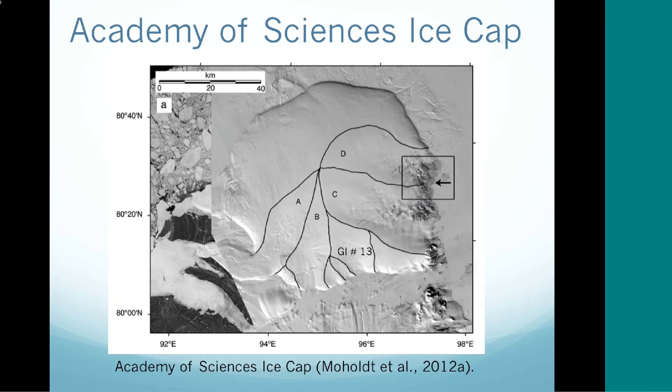This is a zoom-in on the Academy of Sciences, and the letters here are what we like to call ice streams, or areas where ice is flowing out into the ocean. There are five that we looked at. This is an outline of the ice here, and around that is the ocean.